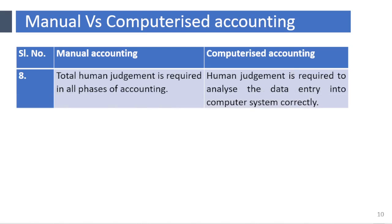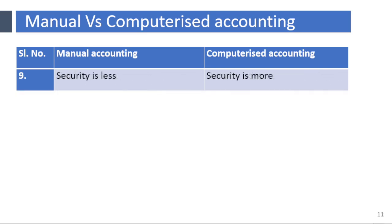Total human judgment is required in all phases of manual accounting, whereas human judgment is required only to analyze and enter data into the computer system correctly in computerized accounting. Security is less in manual accounting, whereas security is more in computerized accounting.